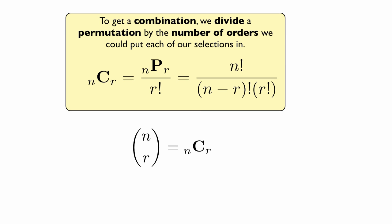As a last note, often you'll see combinations written like this. You read this 'n choose r'—the number of ways you could choose r objects out of n total objects. This has a lot of uses throughout mathematics, so it's very good to be familiar with this notation.